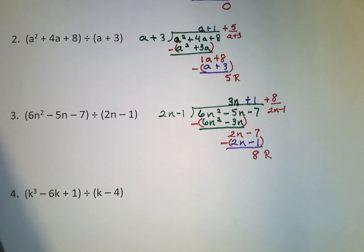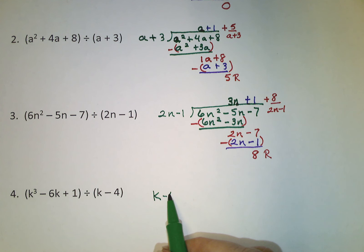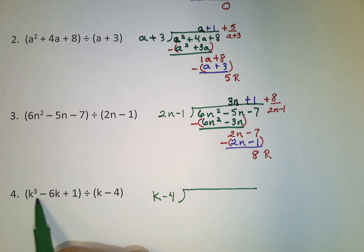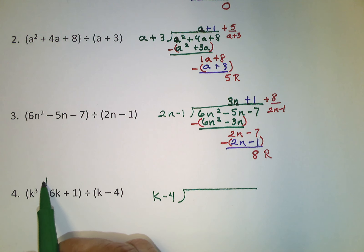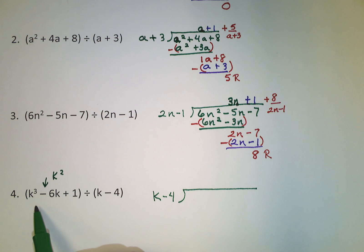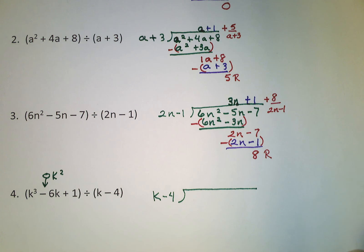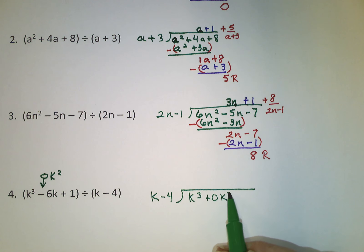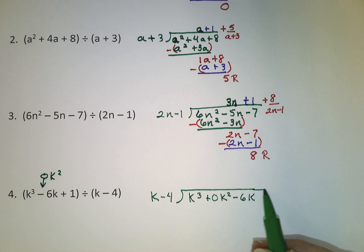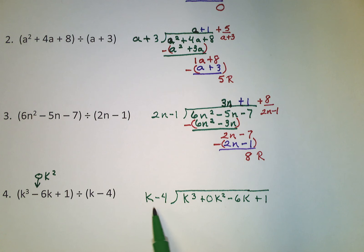There's one more on this page. We're dividing by k minus 4, and we have the dividend terms in descending order — but not complete order. We have k to the third and then skip to plain k; there should be a k squared in there somewhere, and it's missing. So we're going to fake it in by putting in a zero coefficient. When we write the problem out we put k cubed, plus zero k squared, then minus 6k, then plus 1 — filling in that place value. Now the first answer should go over the zero k squared.